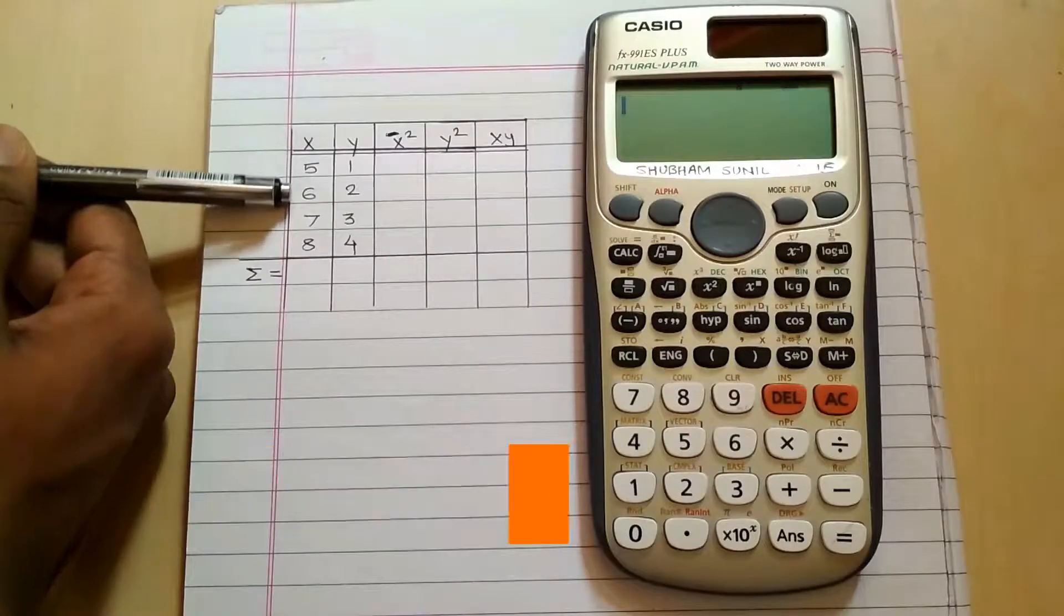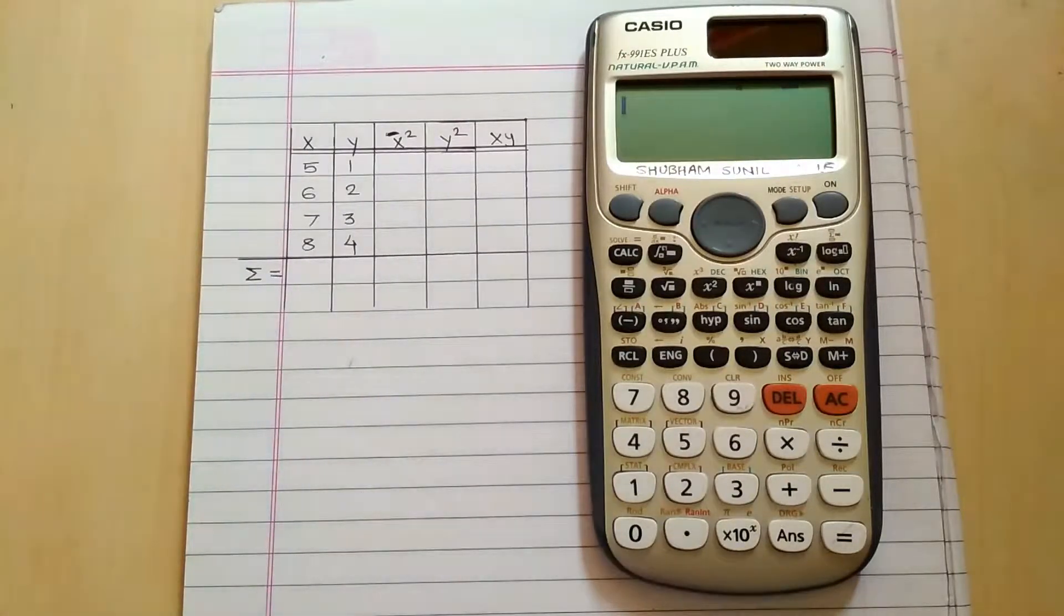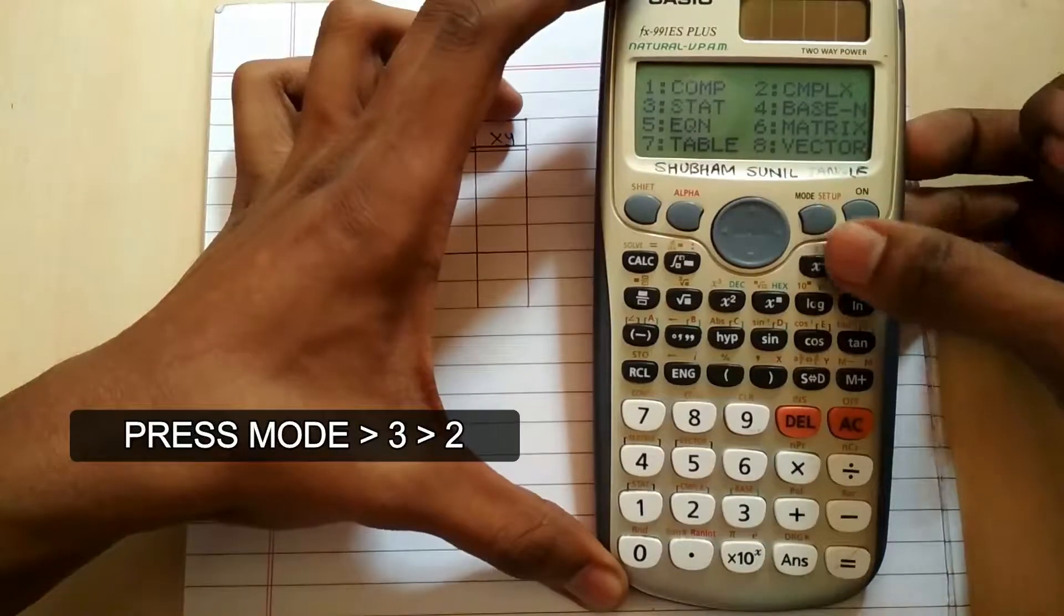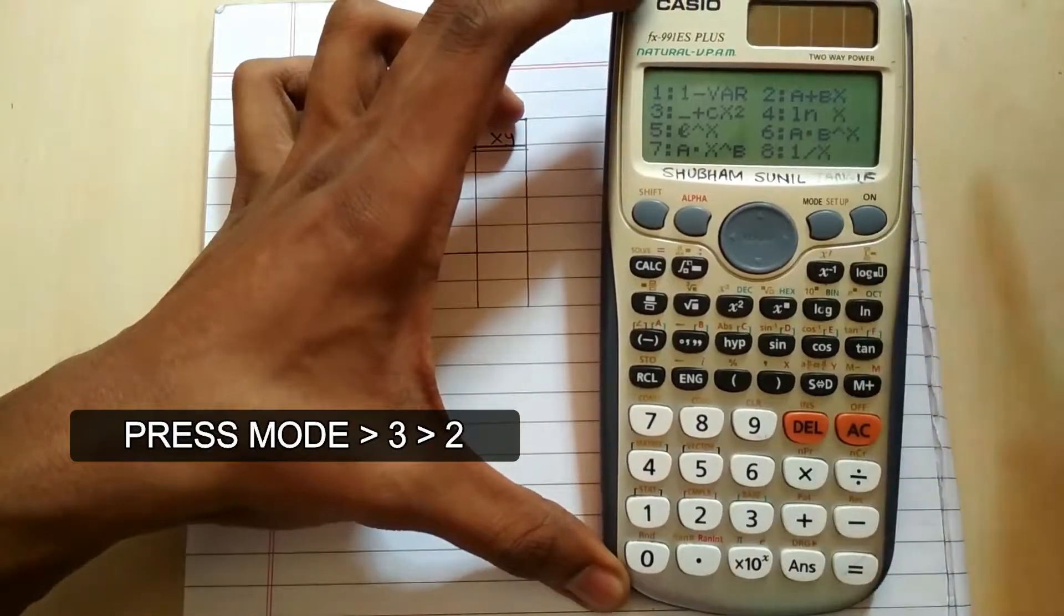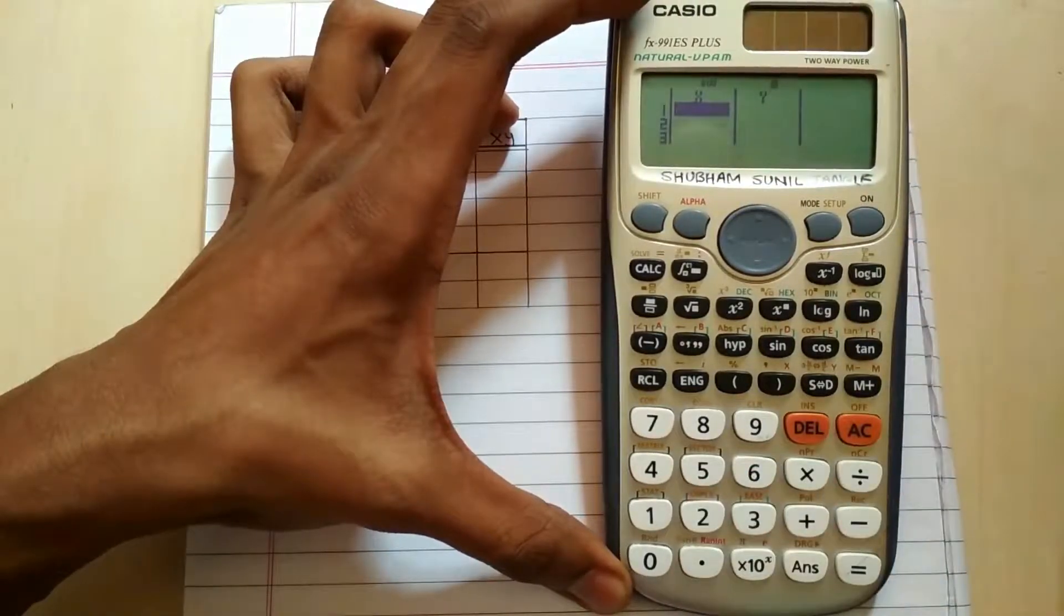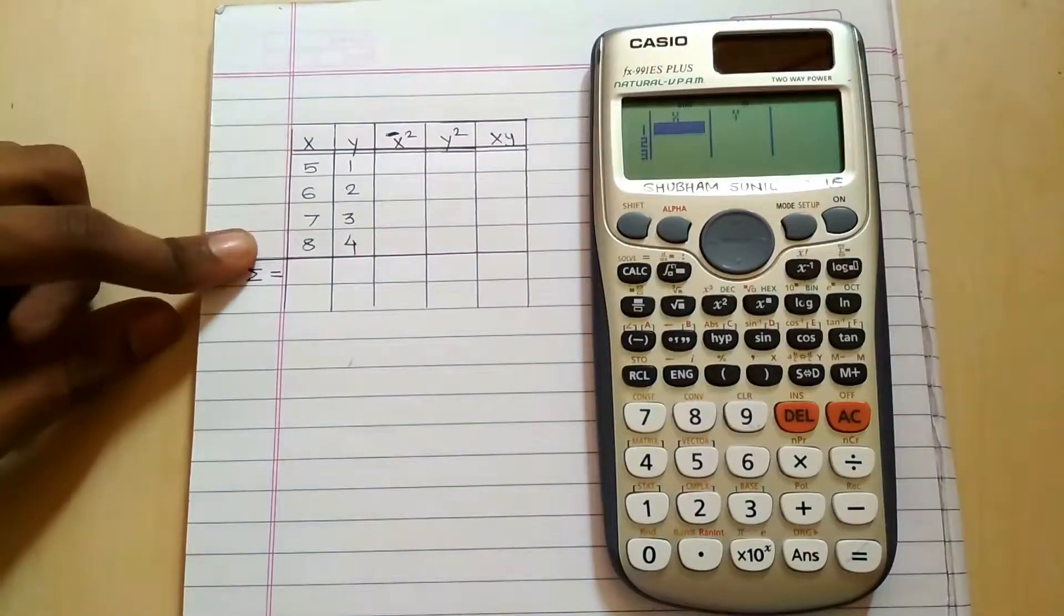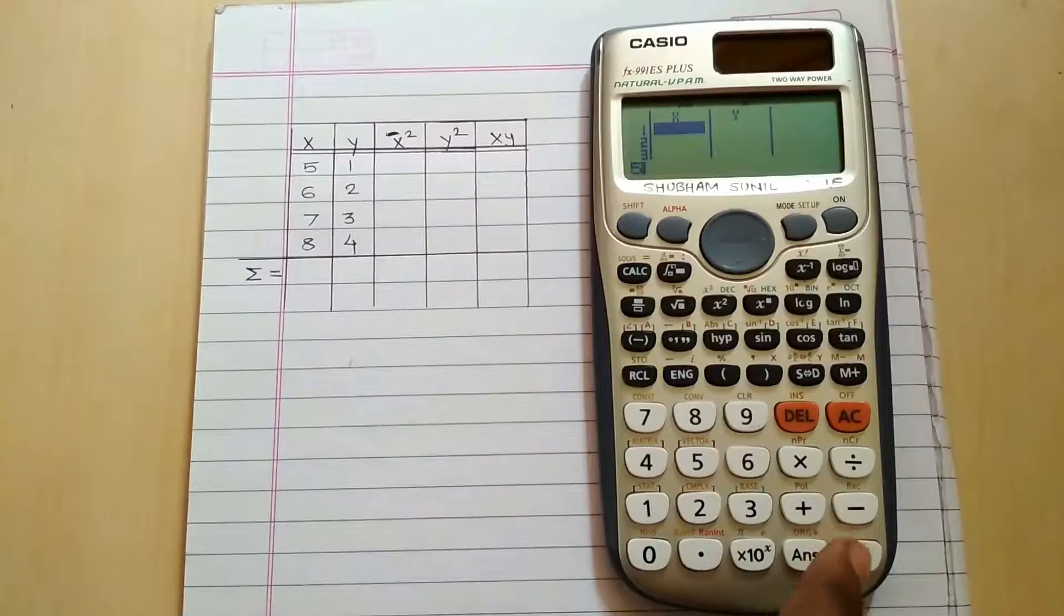The second trick of the day is finding the summation of the tables very easily. This can be very useful for your exams as you get the direct summation answers on ECLC. Just press mode 3 and then press 2, and you got here the table of x and y. Write down the numbers of x and y respectively in the table.